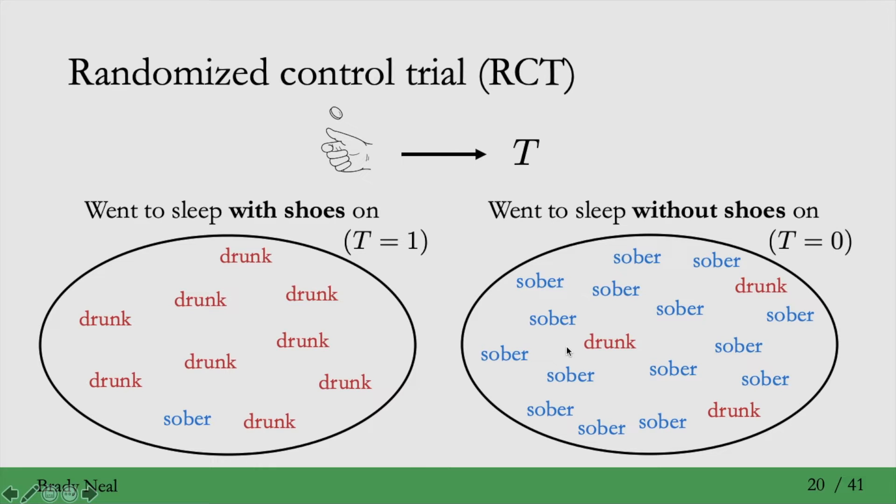What a randomized experimenter would do here is, first of all, they would change what t means. So t equals 1 would change from meaning went to sleep with shoes on to just slept with shoes on. And similarly, t equals 0 would change from went to sleep without shoes on to just slept without shoes on. So you'll see why that's important.